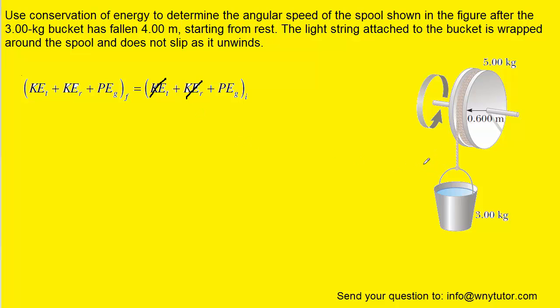Now of course after the bucket has fallen, we have two types of kinetic energy. We have the translational kinetic energy of the bucket as it falls down, and then we have the rotational kinetic energy of the spool as it's spinning, so we have to include both kinetic energies in our final side of the equation.